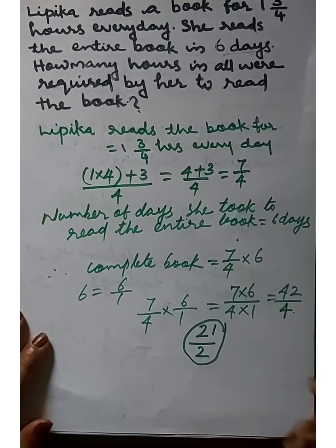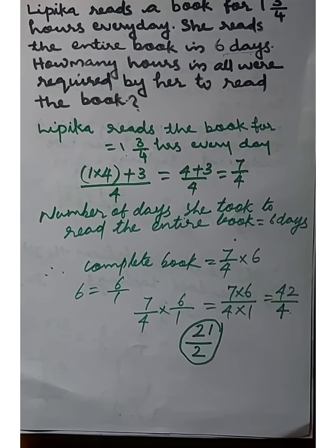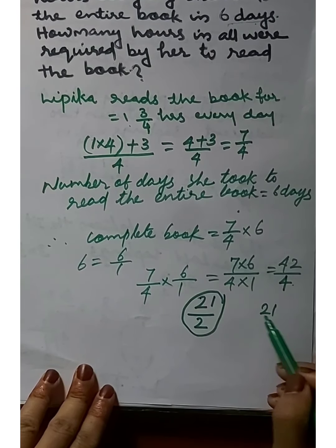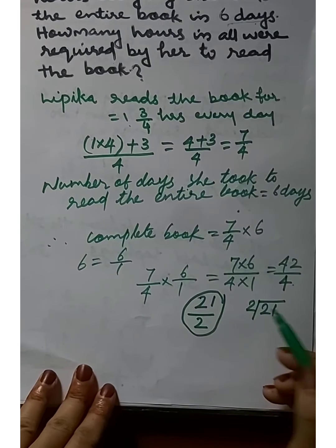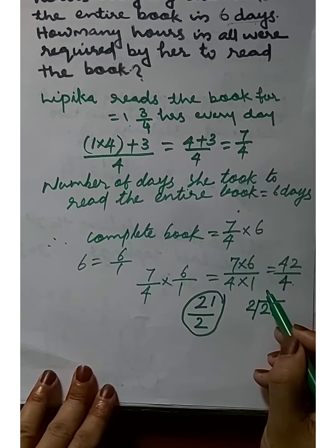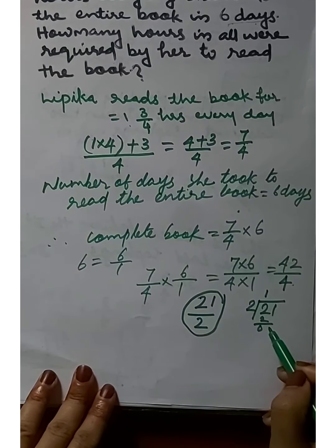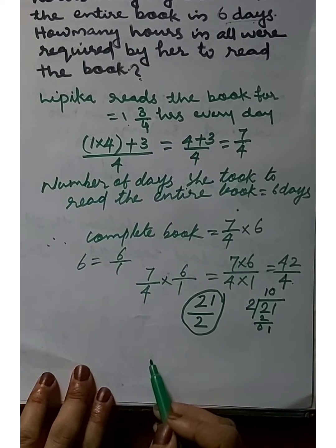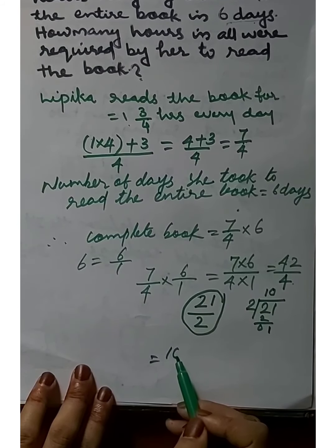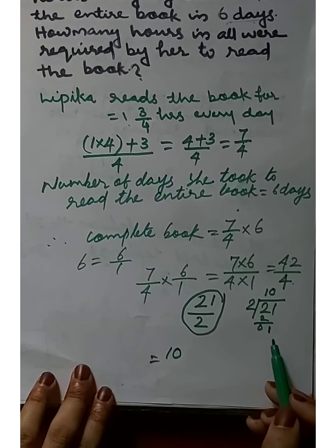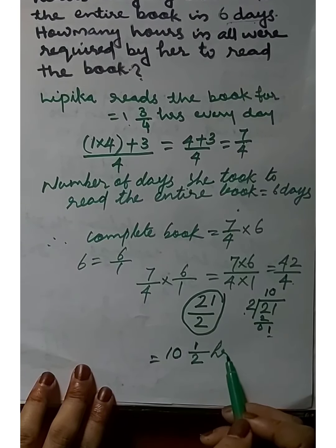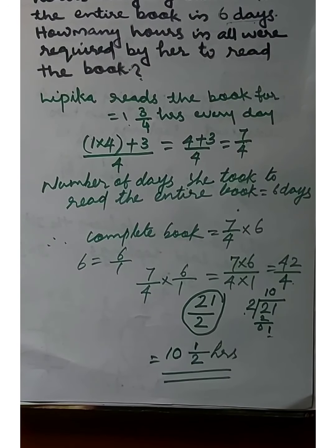This fraction 21/2 is an improper fraction. We convert this improper fraction to a mixed fraction: 21 divided by 2 gives quotient 10, remainder 1, and denominator remains 2. The answer is 10½ hours.